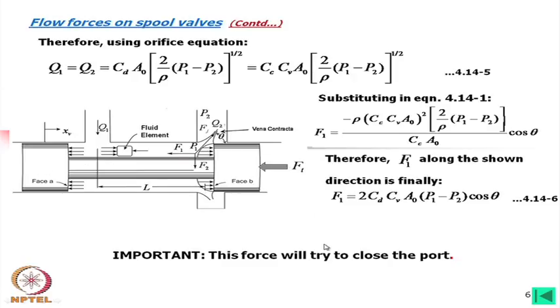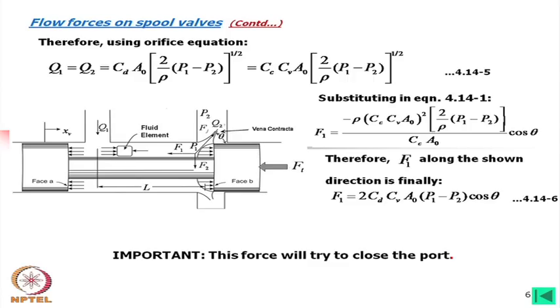This means that while opening the port by pushing the spool to the right, we must apply force from left to right, but the flow force opposes that — it acts to close the port. If we release the spool, it would automatically close. This means the steady state flow force helps in controlling the valve.